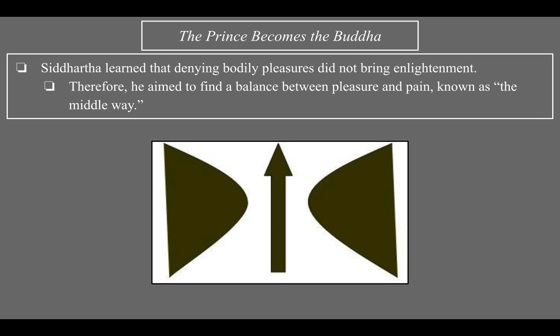From his time as an ascetic, Siddhartha learned that denying bodily pleasures did not bring enlightenment. So he aimed to find a balance between pleasure and pain — a perfect balance known as the Middle Way. Not too much, not too little; he wanted to find this balance.